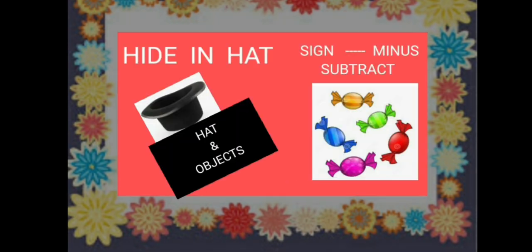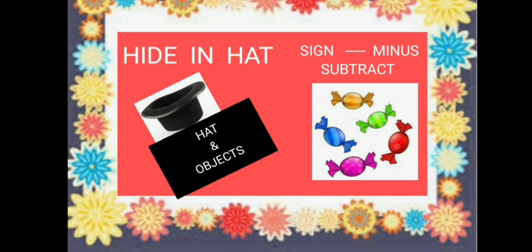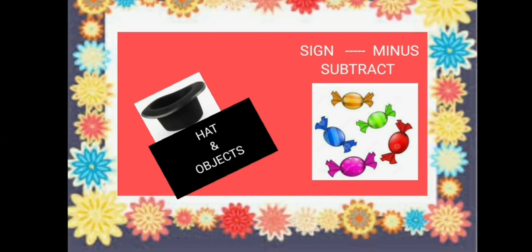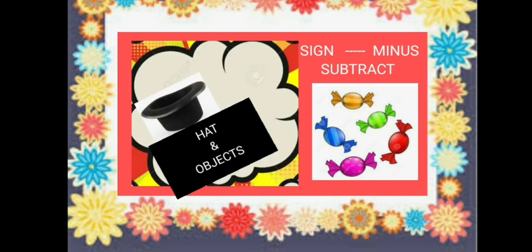Now children, today we are going to play two games for our new concept and that is subtraction. For the first game, you will be needing a hat or you can use cap, box or cloth bag, whatever is available with you. And also we will be needing some objects like candies, toys, blocks. So let's not waste more time and start with our new game.